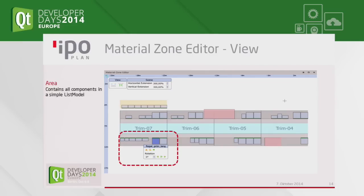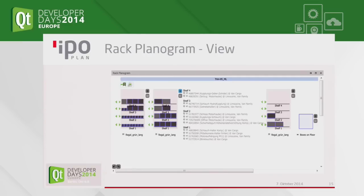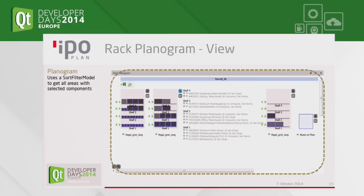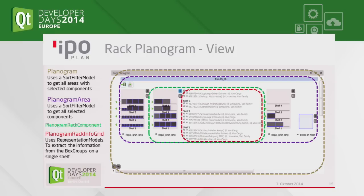This is the layout editor — the material station editor I showed you. The area contains all components in a simple list model, and you have a component-on-area QML file to represent a single component, along with the edit window. You want the possibility to select multiple racks or components, and then you need a sort-filter model of selected components. For the rack planogram, we need to use a sort-filter model to get everything in the correct X direction and show only the selected ones. The planogram area is defined as a single QML file.